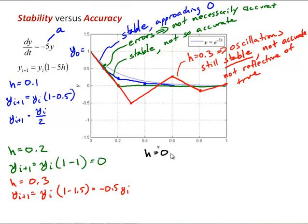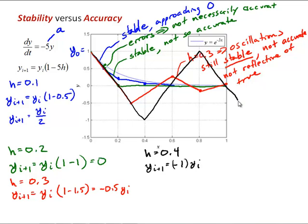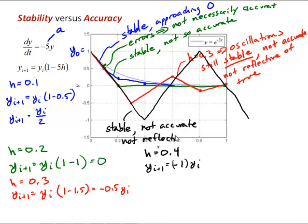For h = 0.4, y_(i+1) = -1·y_i, producing even greater oscillations — basically going back and forth between 1 and -1. The error is not growing in time, so h = 0.4 is considered stable, but definitely not accurate. Note that our stability criterion requires h ≤ 2/a = 2/5 = 0.4, so this step size is right at the stability boundary.